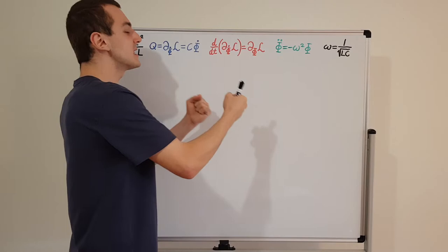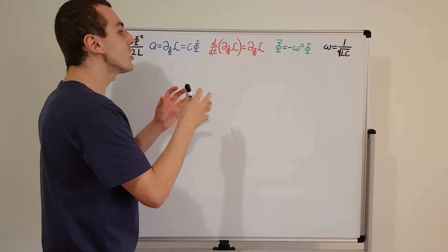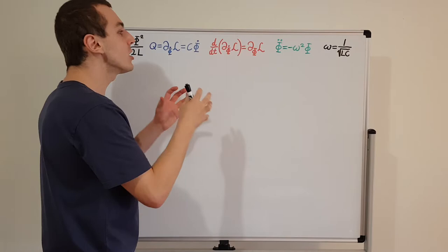We take L and C, which physically correspond to the properties of the capacitor and the inductor in the circuit, and we can use those together to tune omega — the angular frequency of oscillation. Now how do we get this from the Euler-Lagrange equation?